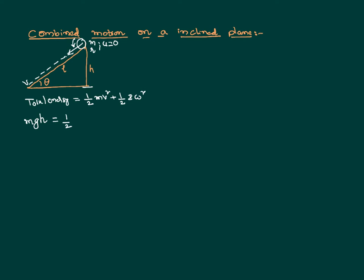Therefore the total energy is mgh, equal to half mv² plus half Iω². We can further write the moment of inertia as mk², where k is the radius of gyration. And as v = rω, omega can be written as v/r, and ω² equals v²/r². So we can write the total energy as half mv²(1 + k²/r²) equal to mgh.